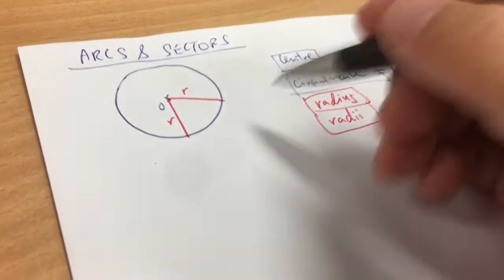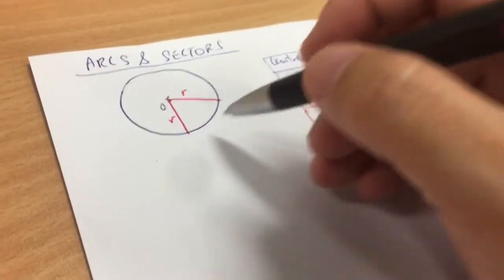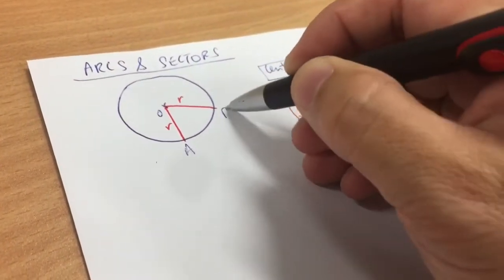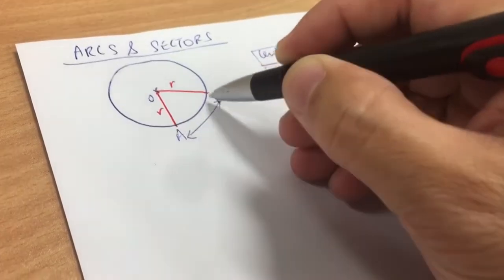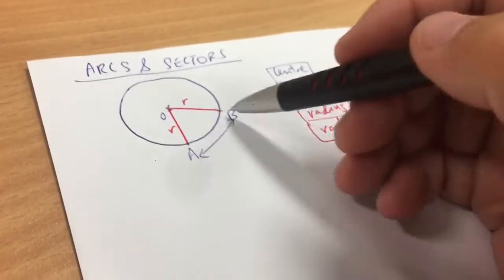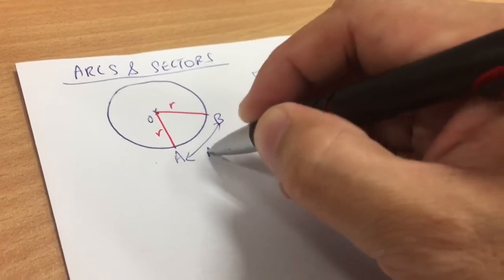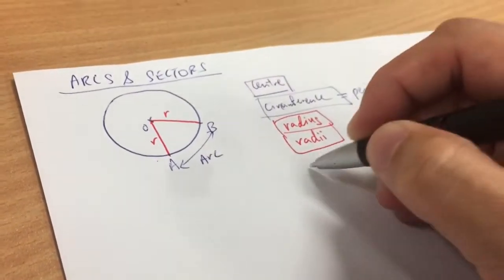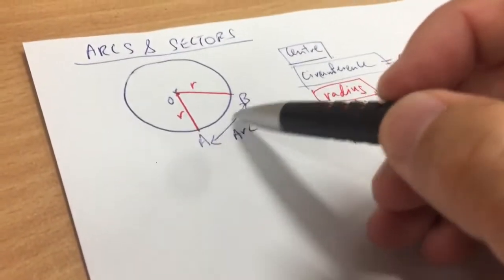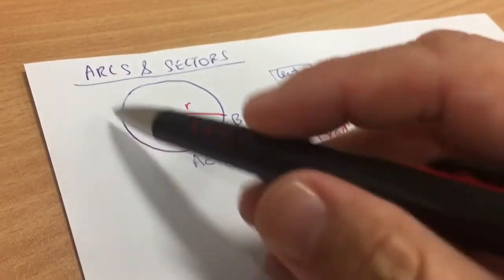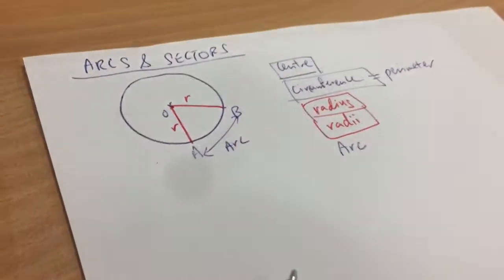The next thing I shared with them: what is a part of a circumference called? For example, let's say this is called AB. What is this length AB — a part of the circumference — what is it called? This is actually called the arc. So an arc is actually a part of the circumference of a circle.